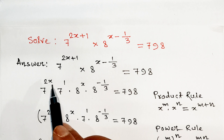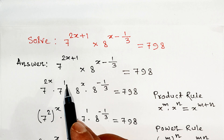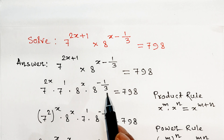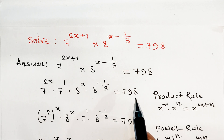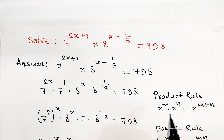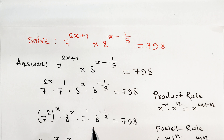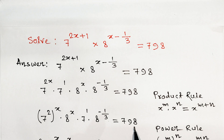We expand using the product rule: 7 to the power 2x, into 7 to the power 1, into 8 to the power x, into 8 to the power minus 1 divided by 3, equals 7.98. Product rule: x to the power m into x to the power n equals x to the power m plus n.